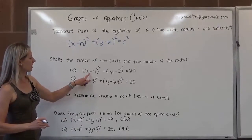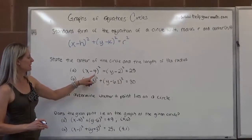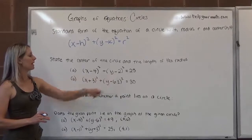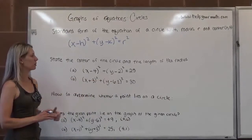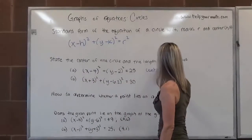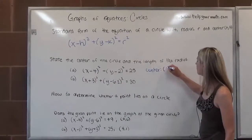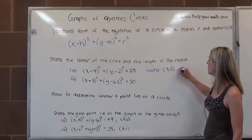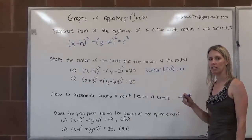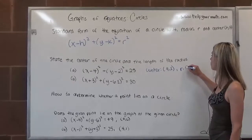So here it says (x - 4), so that means that h is 4. (y - 2)² indicates to us that k is 2. So we're going to say that the center of the circle lies at (4, 2). And then the radius—so this is the square of the radius—so the radius would be the square root of 25, which is 5.